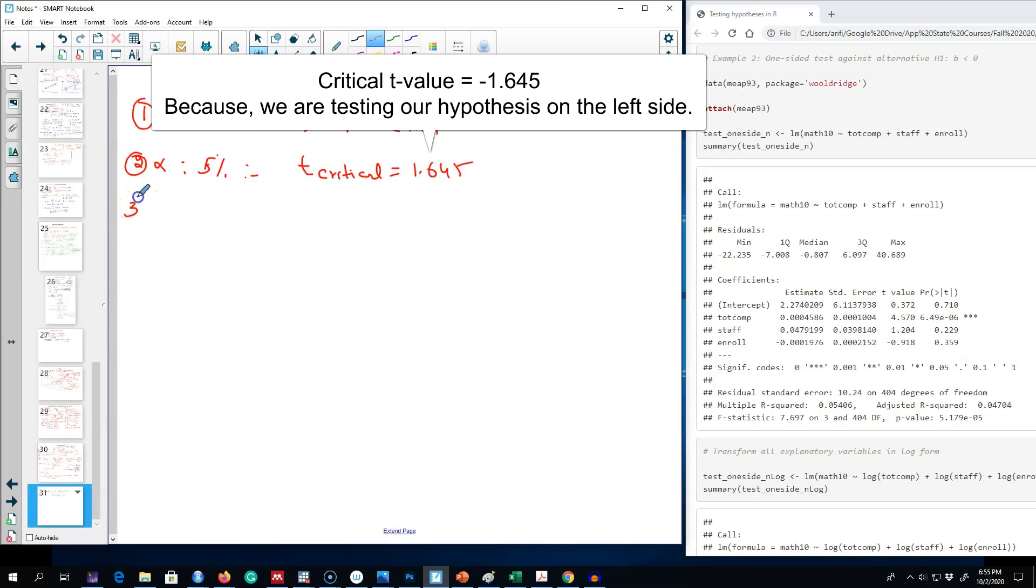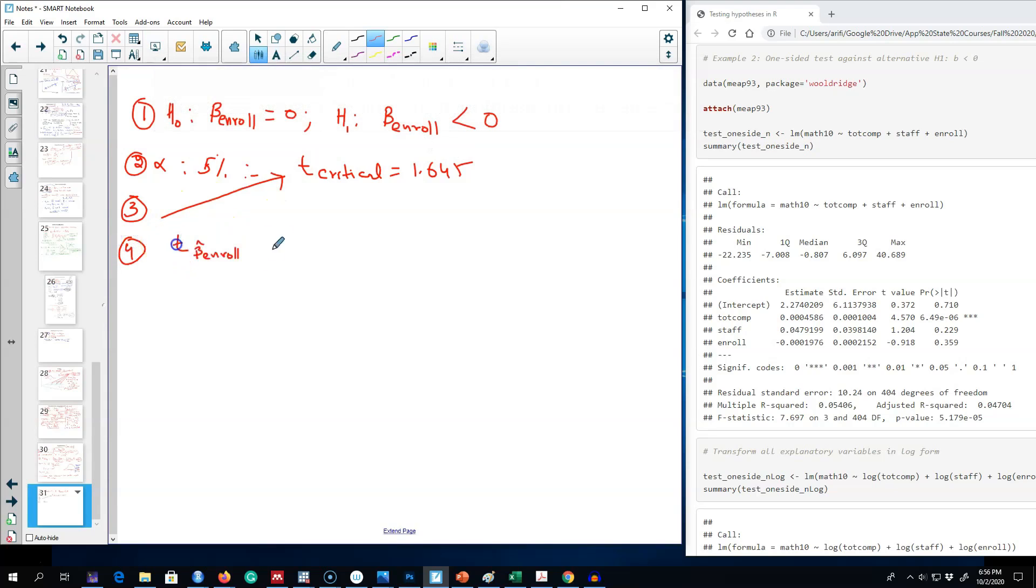Step four: we're going to calculate our t values. T value again here is beta hat enrollment minus hypothesized value of enrollment over the standard error of this coefficient. So enrollment has a value of about minus 0.0019 minus 0, and we're going to divide it by the standard error which is 0.0002.